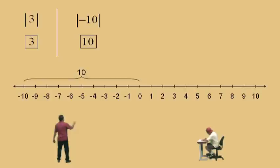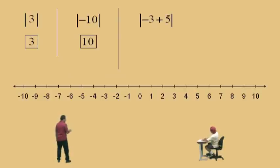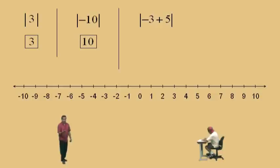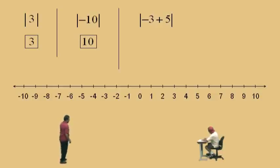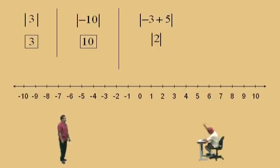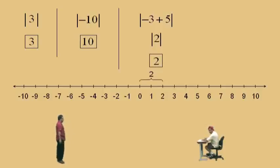How about the absolute value of negative 3 plus 5? Well, before you do the absolute value, you've got to simplify what's inside, or do the operation that's inside. In this case it's an addition problem. Charlie, what's negative 3 plus 5? 2. It's 2. Now you have the absolute value of 2. What is the absolute value of 2? It's 2, because the distance between 0 and 2 is 2.